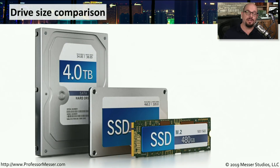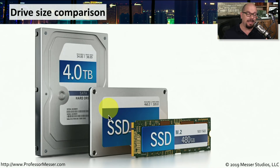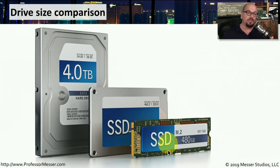Here's a good comparison of form factors. At the back is a 3.5-inch hard drive. In front of that is a 2.5-inch SSD. And there's also an M.2 SSD, which you can see is much smaller than the 2.5-inch drive.